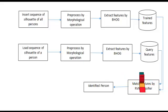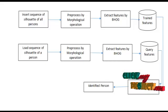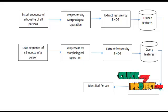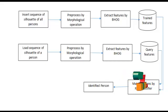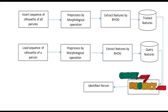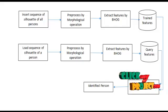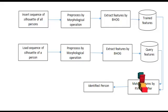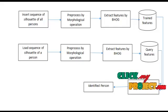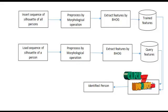Each silhouette is processed and features are extracted. Before that, a morphological operation is applied. Morphological operation essentially removes blurry borders and footprints, and restores the real values of the silhouette. Then feature extraction is performed.